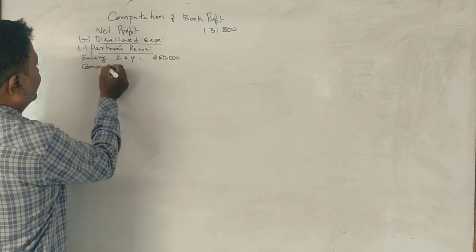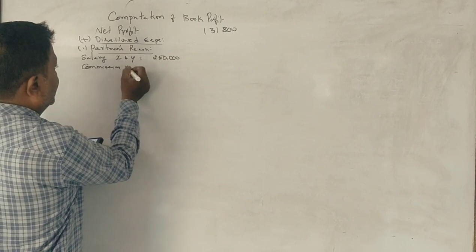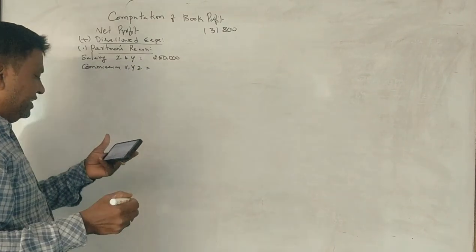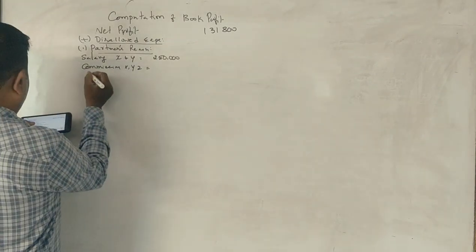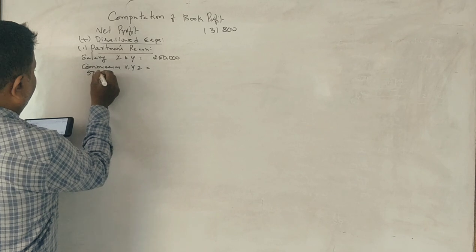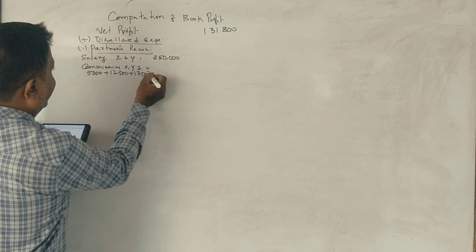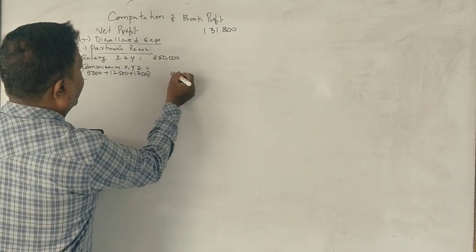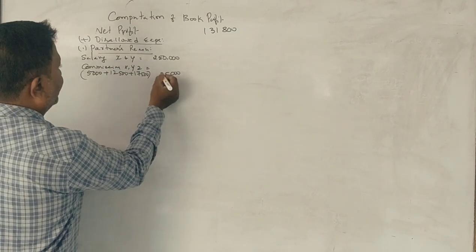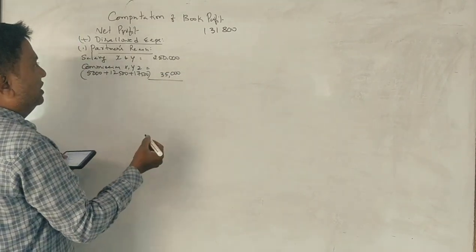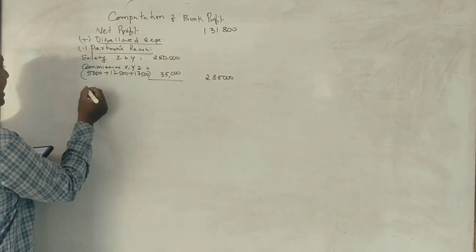So, the commission of X, Y, Z - Rs. 5,000 plus 12,500 plus 17,500, total 35,000. Total Rs. 2,85,000 partners remuneration here.